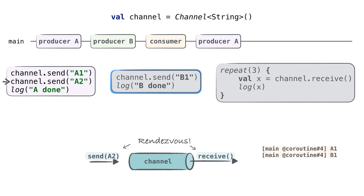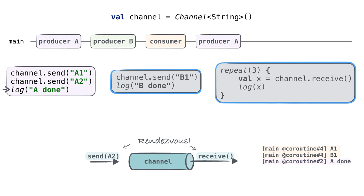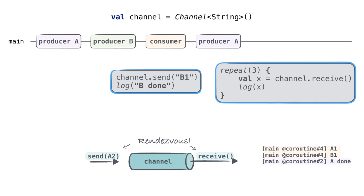Producer A continues its execution and reaches the call sending the A2 value to the channel. The rendezvous happens — there is the receive call already awaiting. The send call doesn't get suspended because it has a corresponding receive call. The consumer coroutine gets ready for execution, but since we have only one thread, it's only scheduled and not yet started. Producer A can continue its execution; it doesn't need to wait. It continues and prints 'A done'. The producer A coroutine has completed everything it was intended to do and is no longer alive.